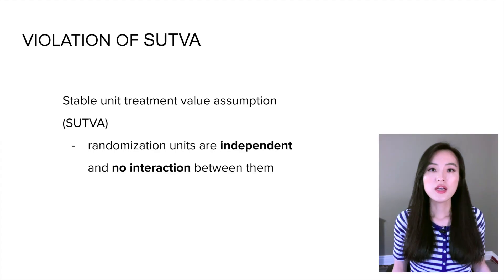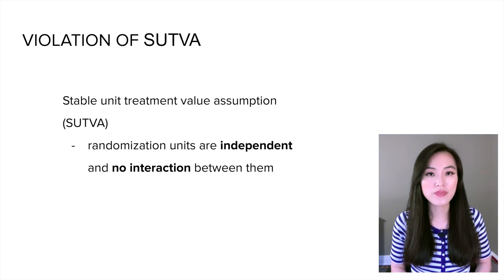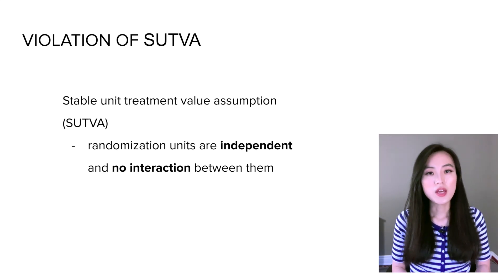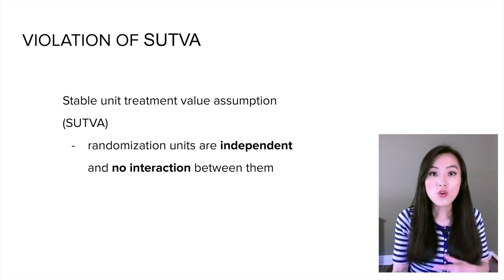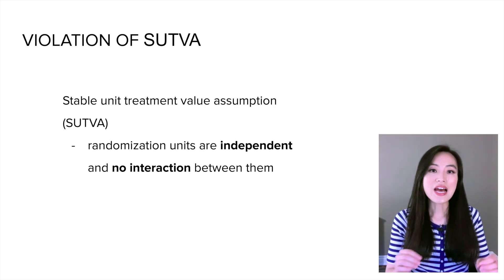To recap, the first factor that makes testing results unreliable is sample ratio mismatch, and we've talked about different ways to debug it. Next, let's go over another common problem that invalidates testing results: randomization units interfering with one another. There is one important assumption of A/B testing — that randomization units are independent with no interaction between them. This is called the Stable Unit Treatment Value Assumption (SUTVA).